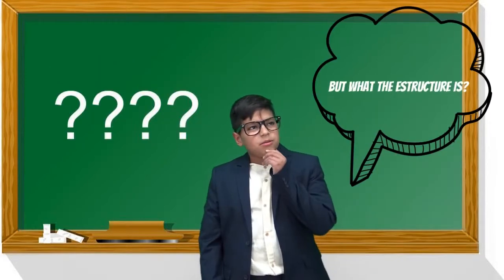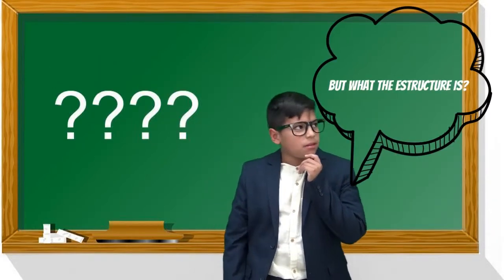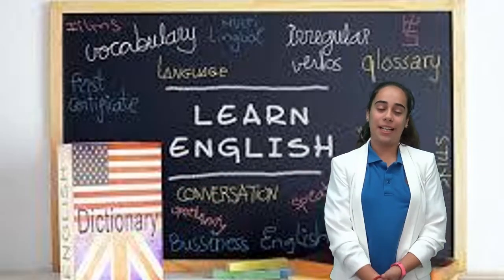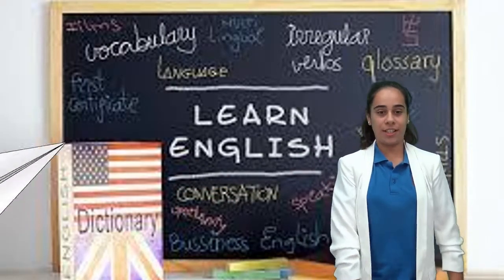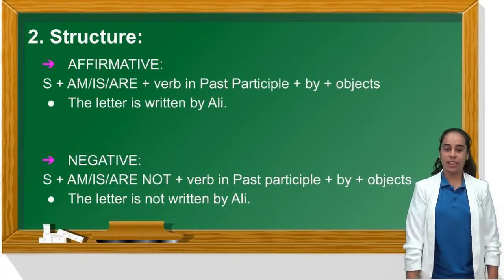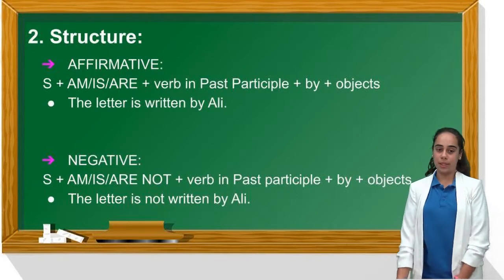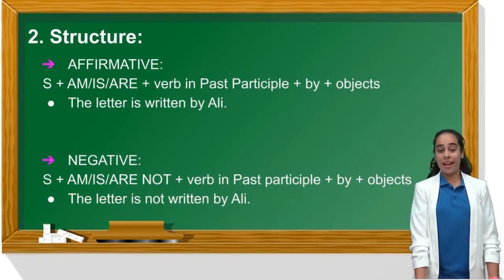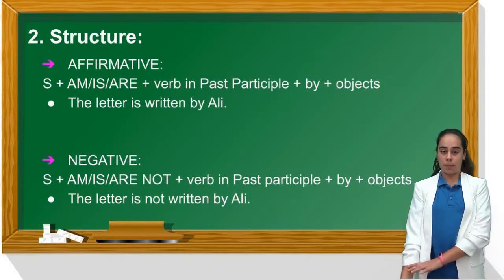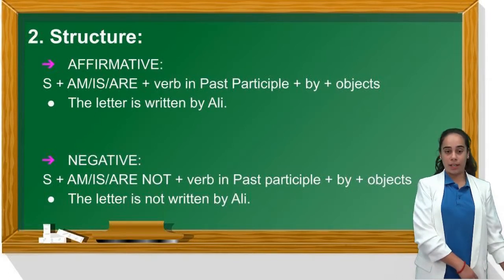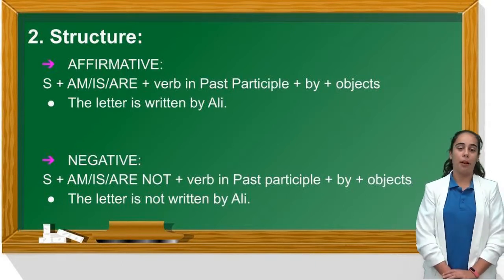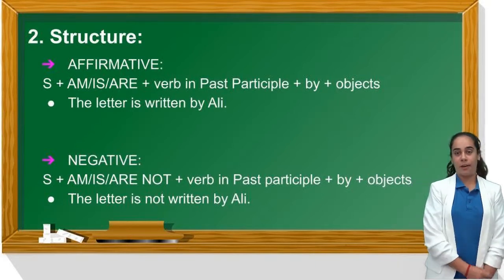But what is the structure of the passive sentence? My name is Marina and I'm also an English teacher. The structure in an affirmative sentence is: subject + the verb to be (is/are) + the verb in past participle of the main verb + by + agent. For example: 'The letter is written by Ali.'